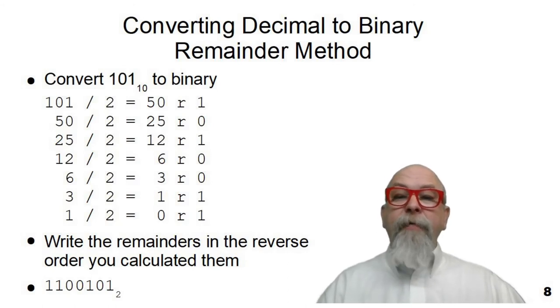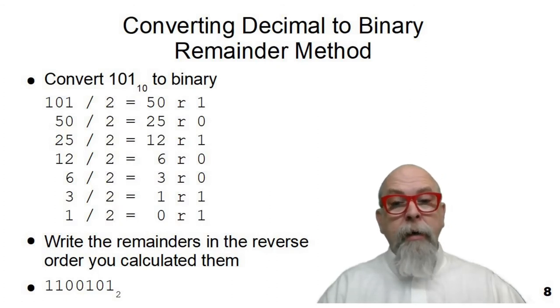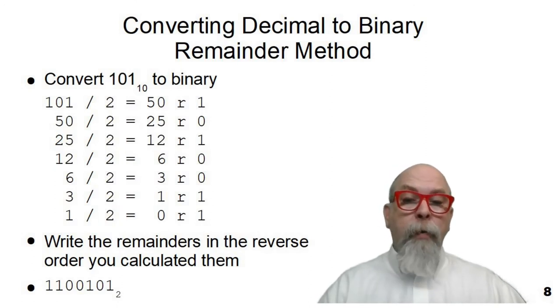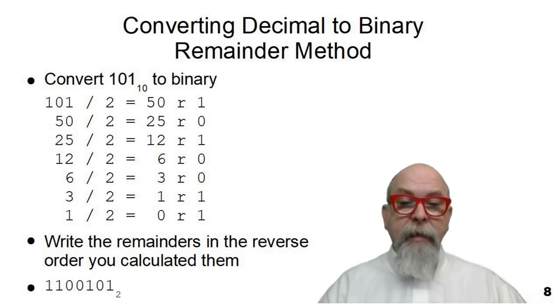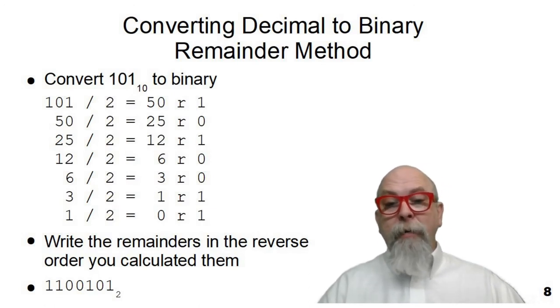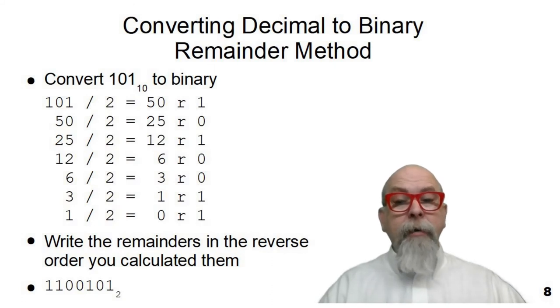So 101 divided by two would be 50 remainder one. We then take the 50 and bring it down and divide it by two and say, well, 50 divided by two is 25 remainder zero. 25 divided by two is 12 remainder one because 12 times two is 24. Then we take the 12 down, get a six remainder zero, bring the six down, get a three remainder zero, bring the three down.